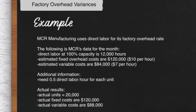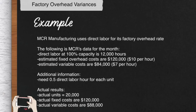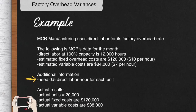Let's discuss factory overhead variances. Our example is MCR Manufacturing. They use direct labor for their factory overhead rate. The following is MCR's data for the month: direct labor at 100% capacity is 12,000 hours, estimated fixed overhead costs are $120,000 or $10 per hour, and estimated variable costs are $84,000 or $7 per hour. Additionally, they need 0.5 direct labor hours for each unit.